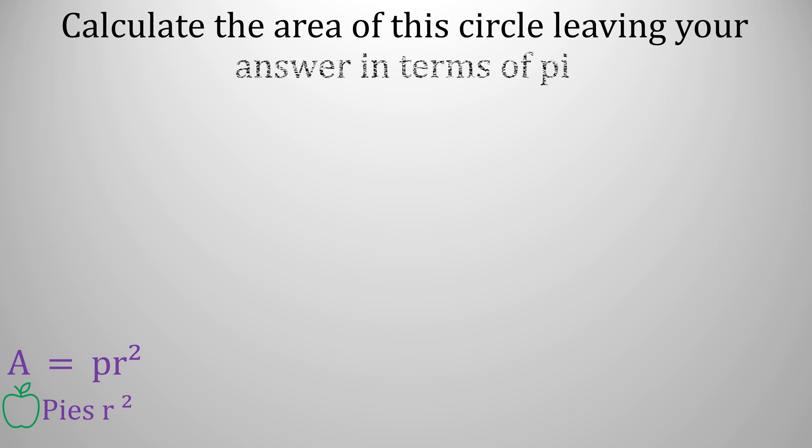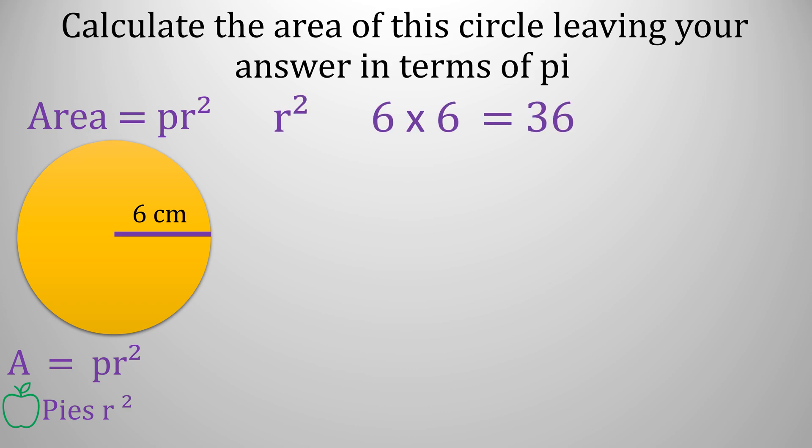Calculate the area of this circle leaving your answer in terms of pi. Now you won't get given the formula in exams, but hopefully you'll learn them. So area is pi times radius squared. 6 times 6 gives us 36.